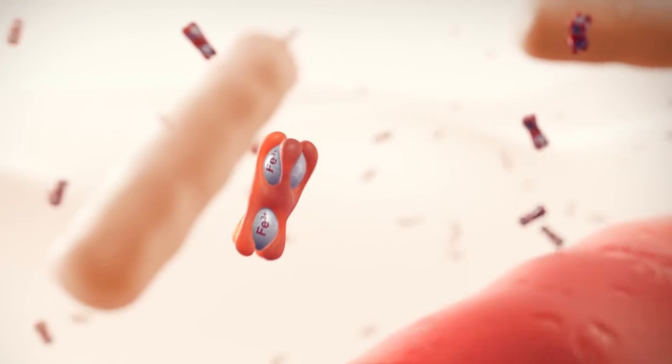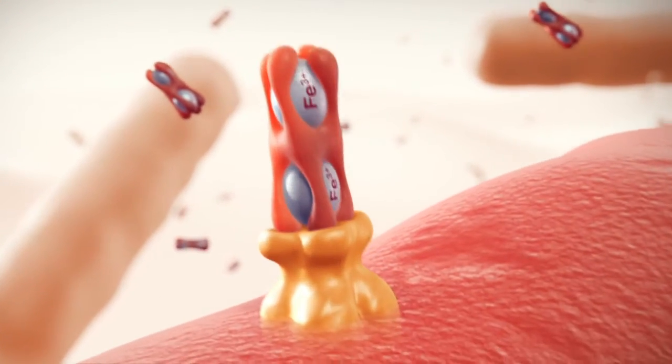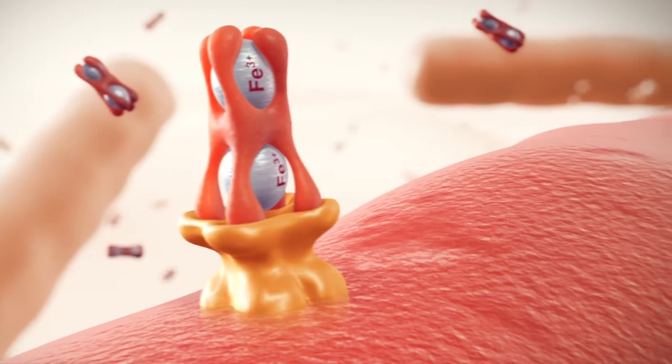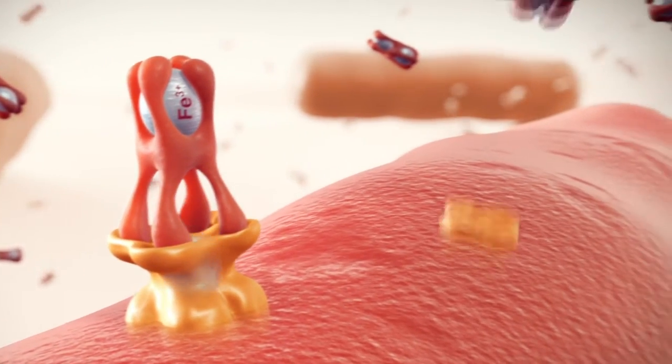In the bovine lung, where free iron is in short supply, they express iron uptake receptors on their surface to ensure the uptake of sufficient quantities.